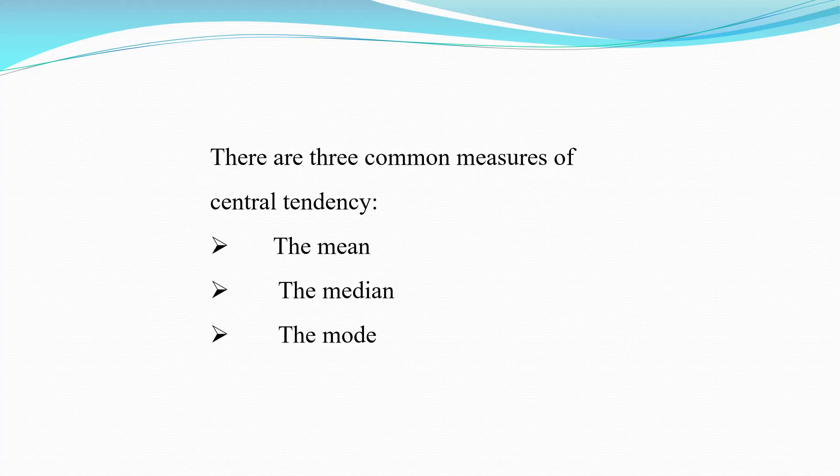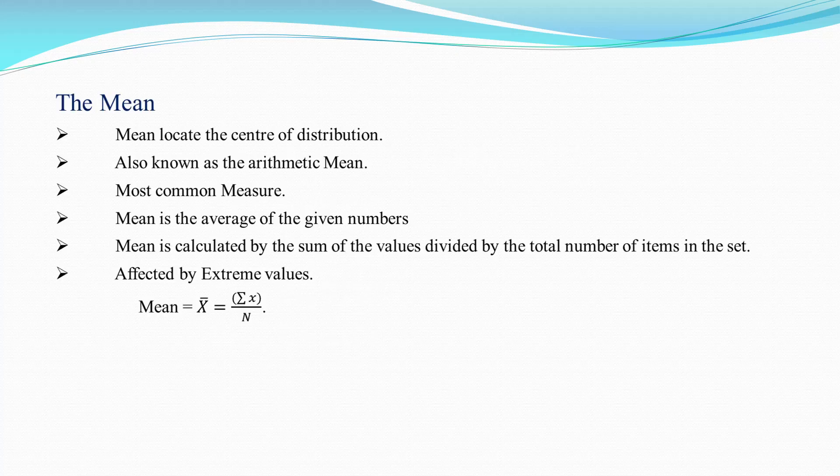There are three common Measures of Central Tendency. First one is the mean, second one is median, third one is mode. Mean locates the center of distribution, also known as the arithmetic mean. It is the most common measure, and the mean is the average of the given numbers.